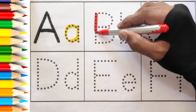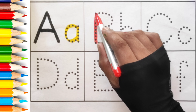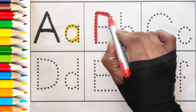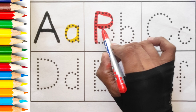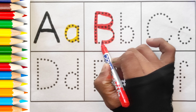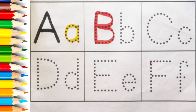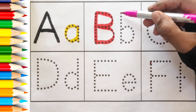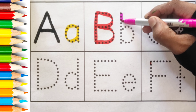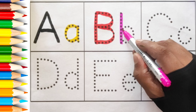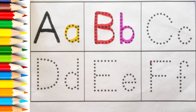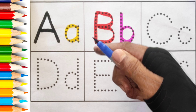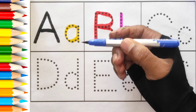B — B is for Butterfly. Pink color. B — B is for Ball. Blue color.